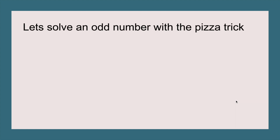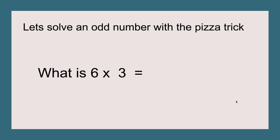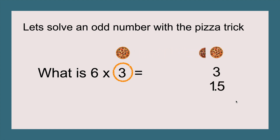Let's solve an odd number with the pizza trick. What is six times three? We're going to circle our three and put it over there. The half of three is one point five. Since one point five is a decimal, we're going to take away the dot and make it fifteen. Three plus fifteen equals eighteen. Eighteen is our answer, and six times three equals eighteen.